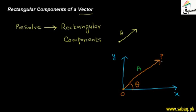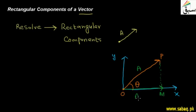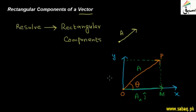Looking at the rectangular components: the projection along the x-axis is OM, which is the x-component along the i-axis. The unit vector i-hat represents direction along the x-axis, so the x-axis component is Ax. The projection along the y-axis gives the j-axis component, where j-hat is the unit vector representing the y-axis.